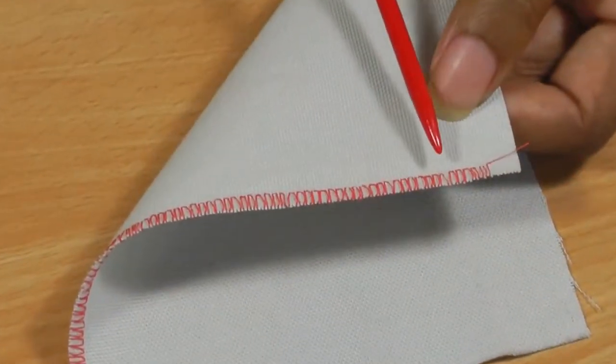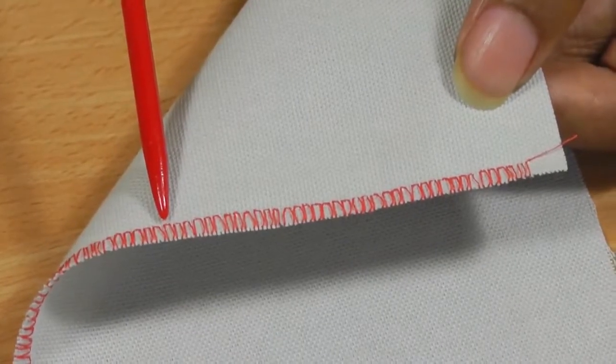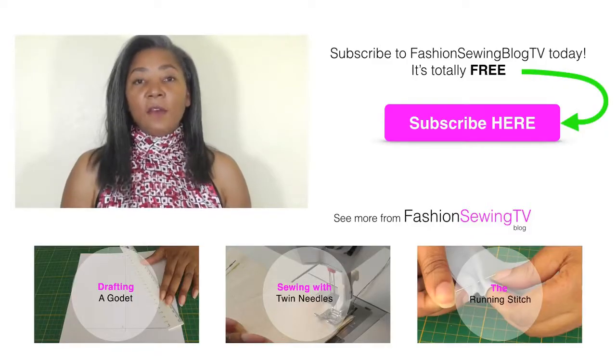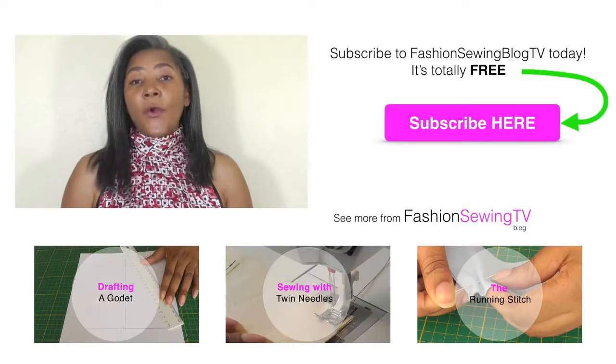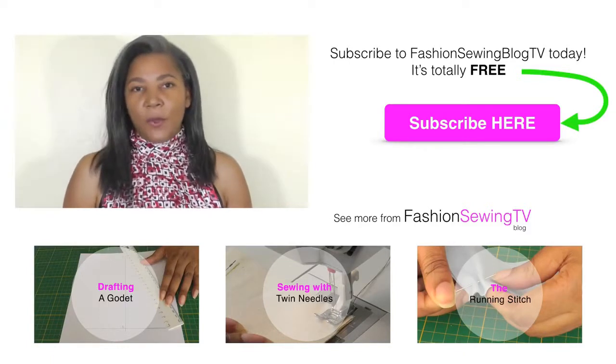So there we have a beautiful finish to a raw edge using an overlock foot. The overlock foot can be used for a decorative finish or you can use it to cover a raw edge. It's a great little foot to have in your sewing box.